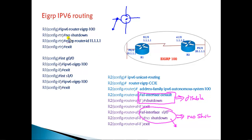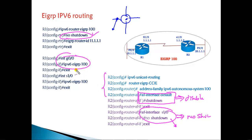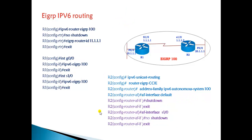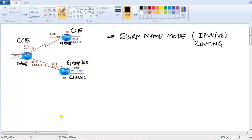In classic mode, you must give a 'no shutdown' command globally to enable EIGRP — that's mandatory. In name mode, it's not required; EIGRP is enabled by default on all interfaces, and you manage it by disabling globally via 'af-interface default shutdown' and selectively enabling on specific interfaces. Let's get into the command line to verify these configurations.